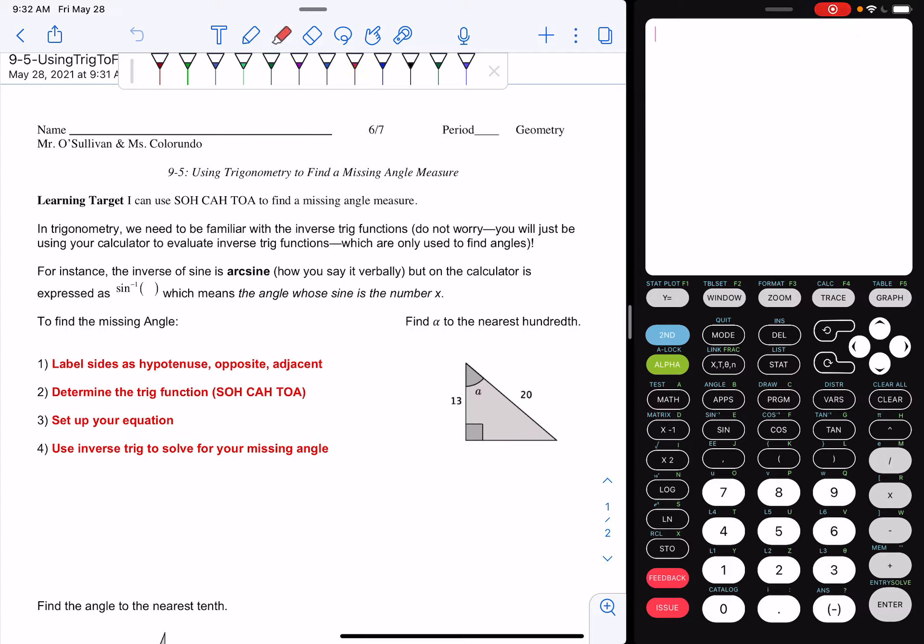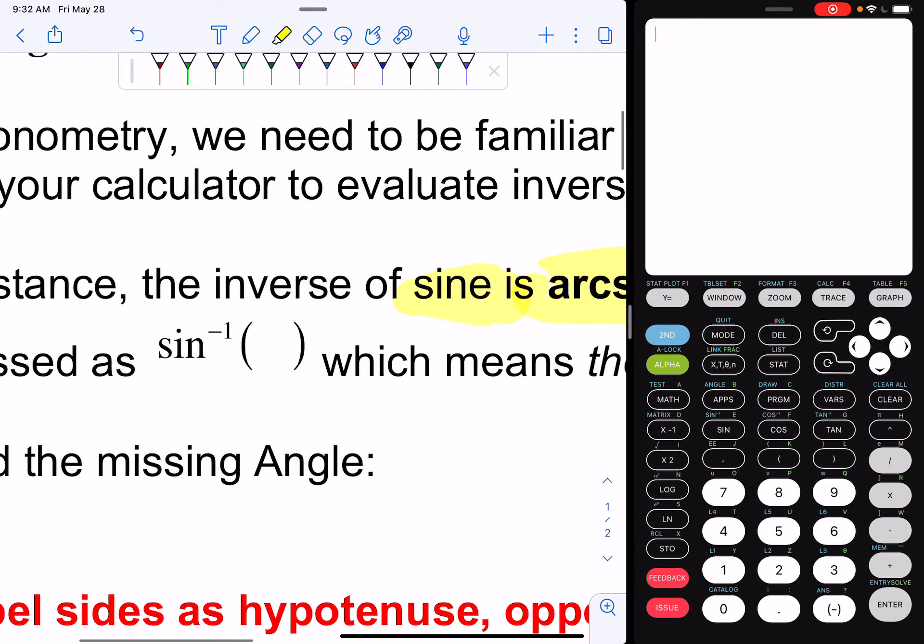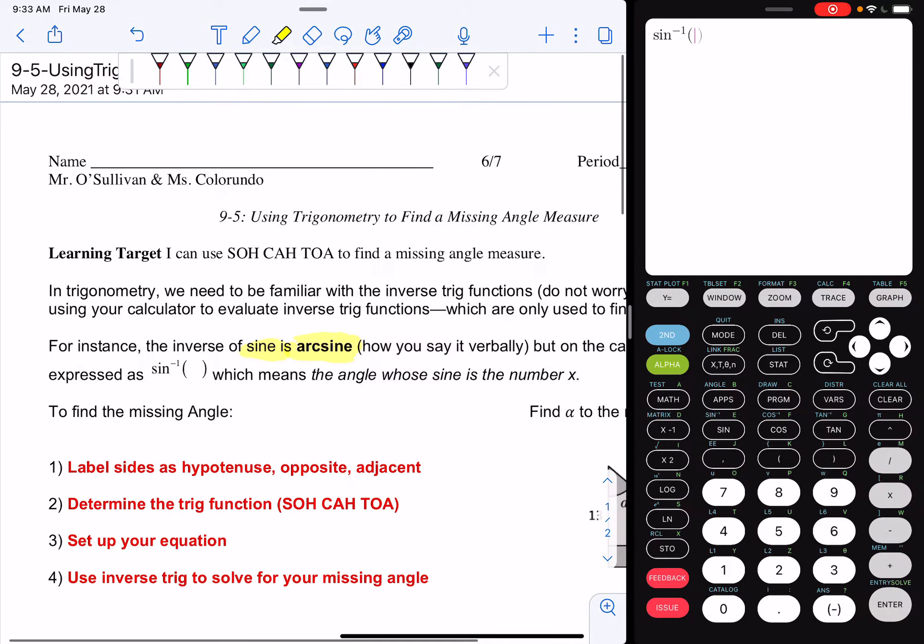For instance, we say that the inverse of sine is arcsine, how you say it verbally, but on the calculator it's expressed as sine to the negative 1. So if you're using a TI-84, you're going to hit the second key and then sine to make your inverse sine.